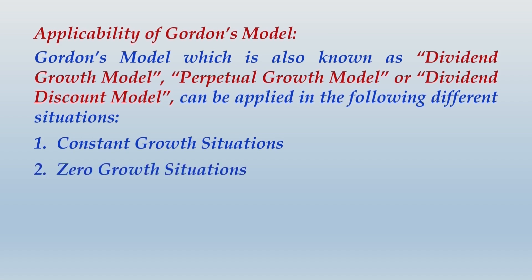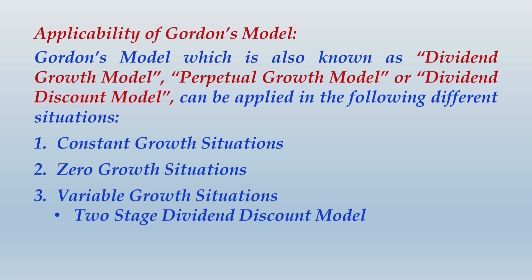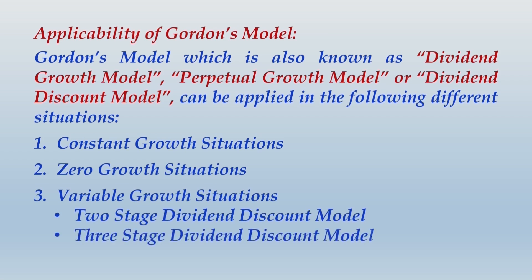The situations are: constant growth situations, zero growth situations, and variable growth situations — also referred to as the concept of supernormal growth. Within variable growth situations there are two variations: one is the two-stage dividend discount model and the other is the three-stage dividend discount model. Please write this up and then we move ahead.